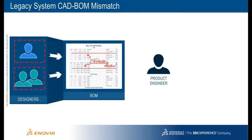Your designers interact with the product engineer through a bill of materials. With file-based collaboration, each group of discipline-specific designers creates a product structure in CAD that produces an engineering bill of materials, often as a file or spreadsheet. The product engineer needs to aggregate this information and keep a spreadsheet or specialized BOM system updated. When the product structure changes, your product engineer must then make manual corrections to the BOM.